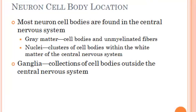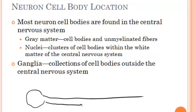We already looked at a neuron and how there's a neuron cell body. The interesting thing is that most of the cell bodies are found in the central nervous system. Remember from last lecture, the central nervous system is made up of the brain and the spinal cord, so the majority of those cell bodies are found either in the brain or in the spinal cord. Remember a neuron has an axon — you have some sort of cell body, and then you have the axon, which is a long process that goes out to different parts of the body.